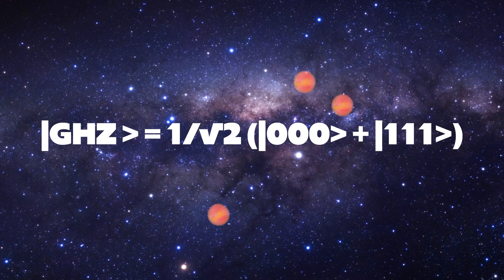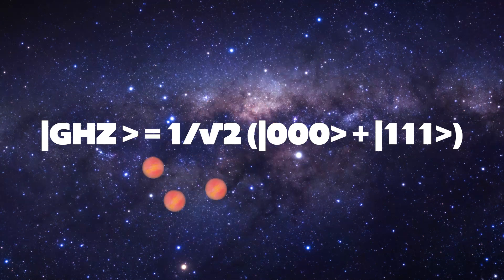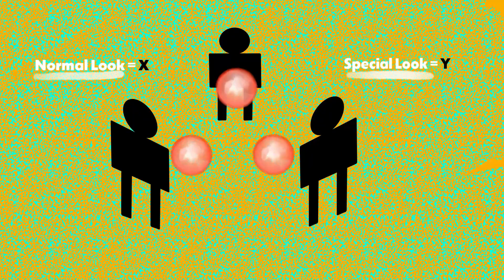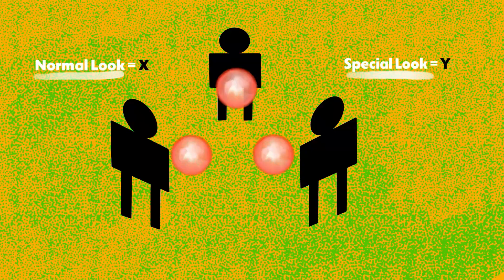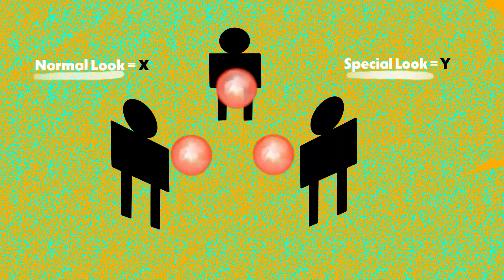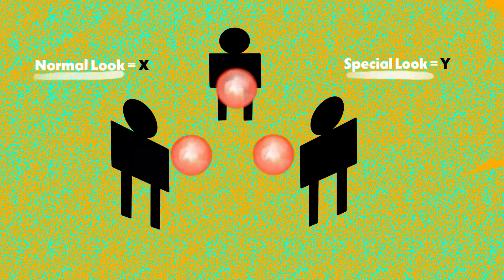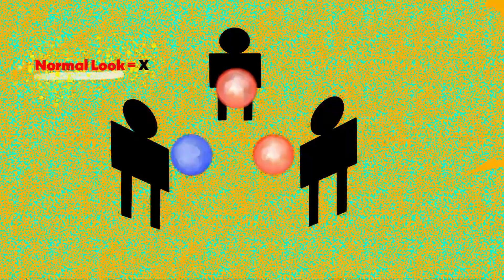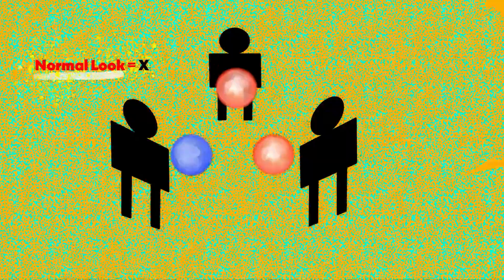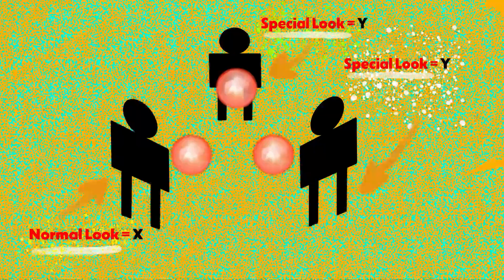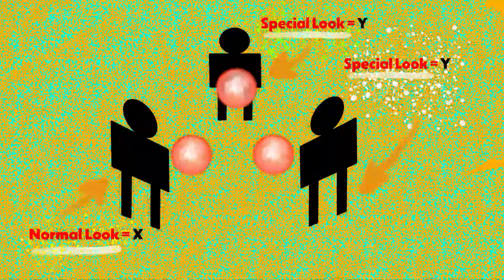This equation represents a superposition where the particles are in a blend of all being in state zero and all being in state one simultaneously. It's like a cosmic coin toss where the outcome isn't decided until you observe it. Imagine you and your friends each hold a ball that can magically change between two colors, red and blue. You can choose to check the colors in two ways: either a normal look (X) or a special look (Y). If all three of you use the normal look, the balls always turn out such that one is different. If one of you uses the normal look and the others use the special look, the balls always turn out to be the same color.